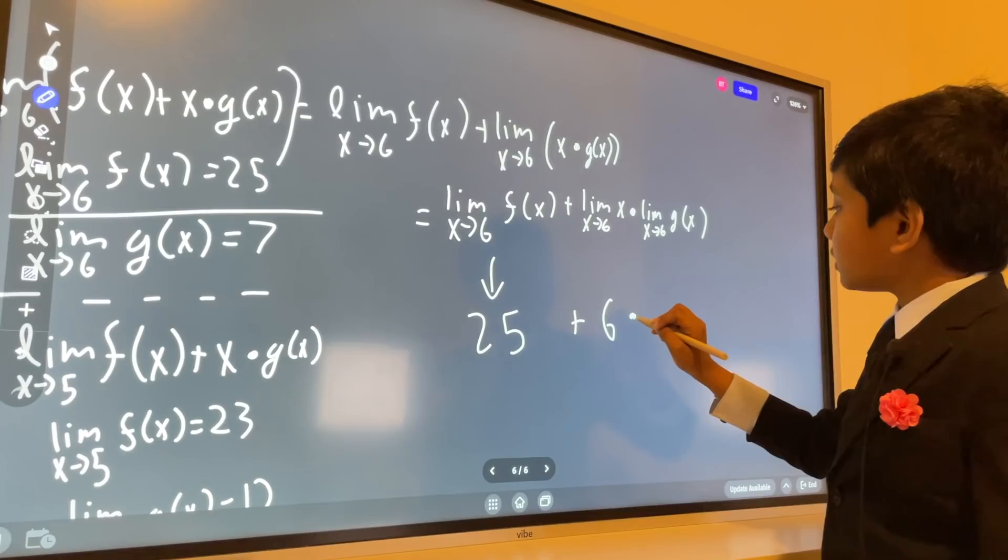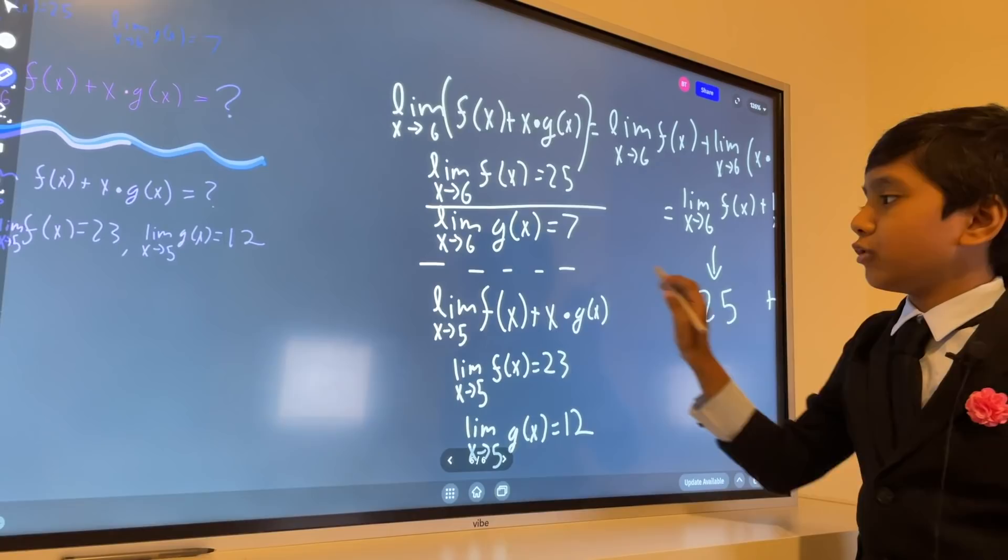Which, if we look at our little value table, is equal to 7. So we'll put 7 in its place.